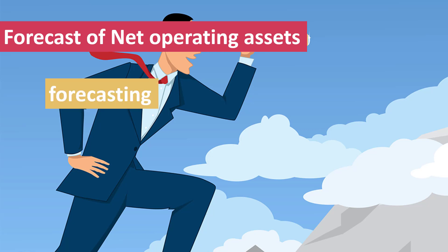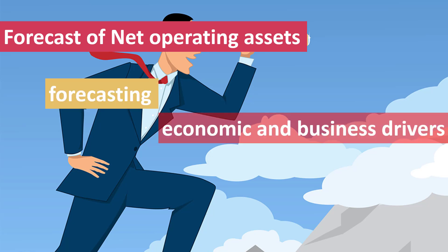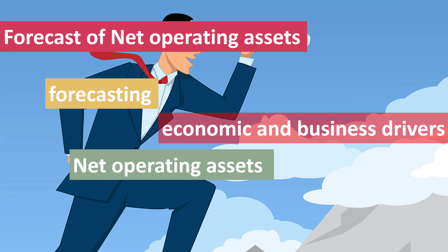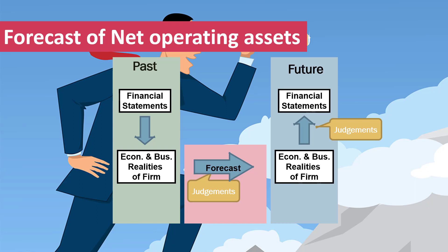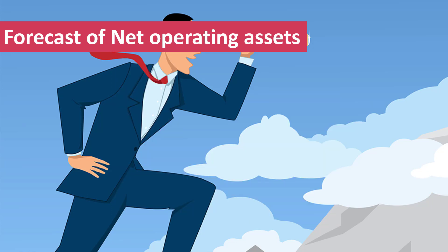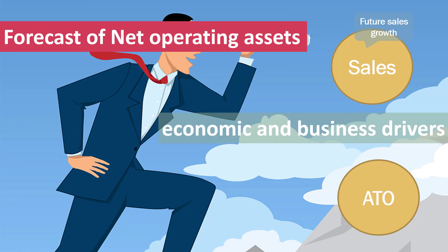Forecasting net operating assets involves first forecasting the economic and business realities or drivers of a firm's net operating assets. We can then estimate the effect of those future drivers on the firm's future accounting drivers of net operating assets, and so forecast a firm's net operating assets. Our identification of the accounting drivers helps to frame our assessment of the firm's economic and business realities — specifically those that connect to the key accounting drivers: sales, sales growth, and asset turnover. We are interested in those aspects of a firm's economic and business realities that will affect its sales and asset turnover.